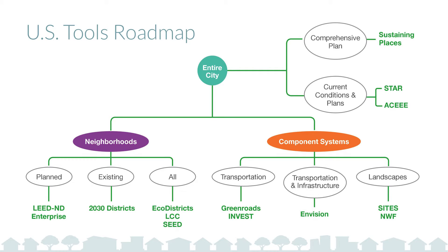Dropping down beneath the city level, we'll look at neighborhoods. On the left you see the three kinds that we'll look at: tools for planned neighborhoods, tools applied to existing neighborhoods, and some tools that apply to all neighborhoods, both planned and existing. In the lower right, the component systems are broken out — tools that are single-purpose assessments of transportation systems, or transportation combined with infrastructure, and lastly landscapes and tools devoted strictly to parks and landscapes.